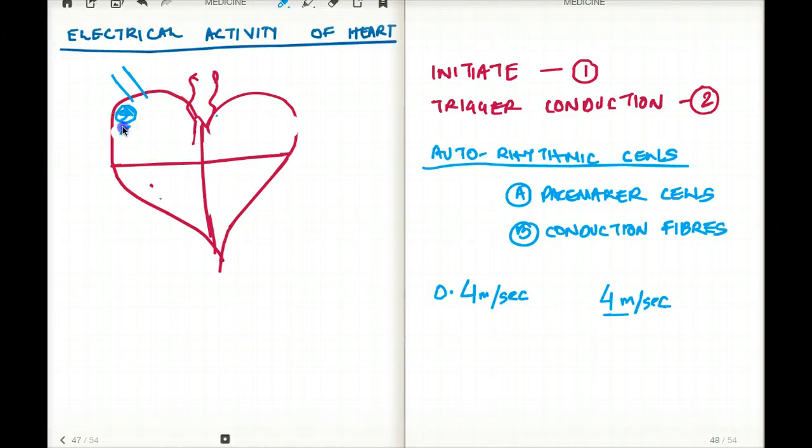The action potential is going to depolarize the atria. It generates the action potential in the SA node, and then this depolarization is going to spread to both the atria through the conduction system. Once the depolarization happens, the atria will contract.